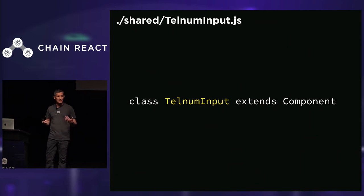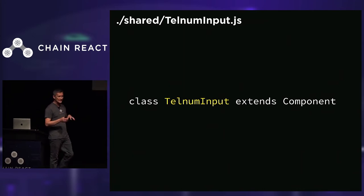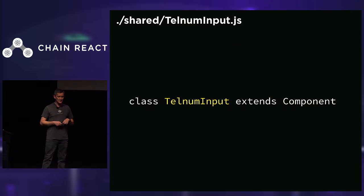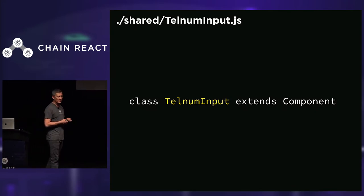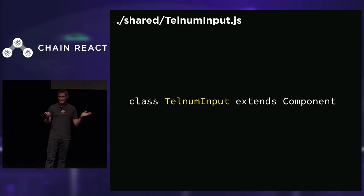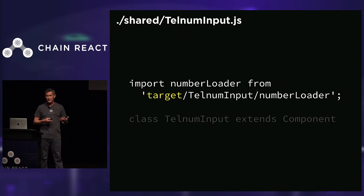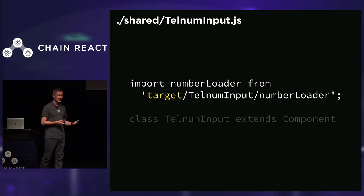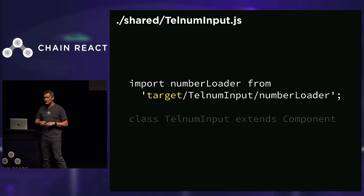Let's make this real and build a component together. We're going to build a component that accepts keyboard input and, as you type, formats it as a telephone number. First, we start with the base shared implementation — a new file called telnuminput.js in our shared folder. This new component extends a basic component. We're importing a number loader using our target alias, because it needs to be loaded somewhat differently on the web versus React Native — but we can just use the target alias and it knows to do the right thing.